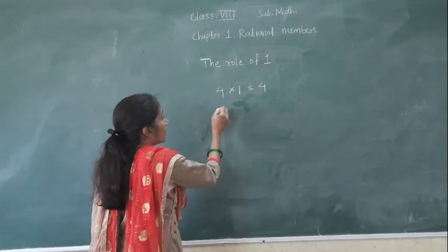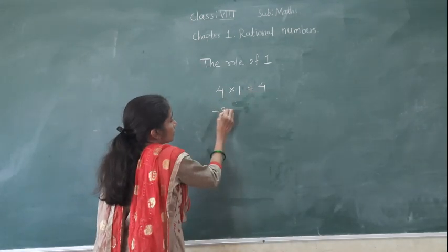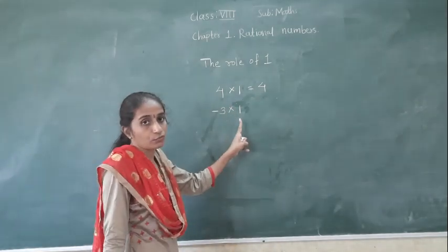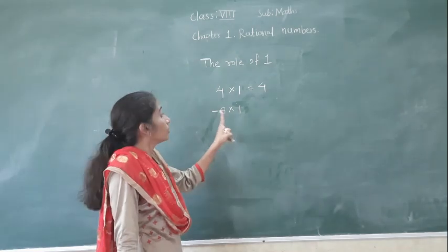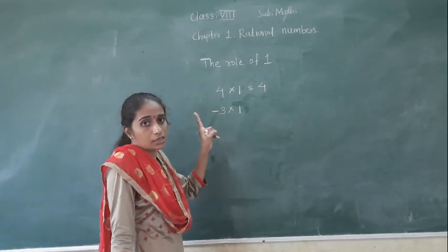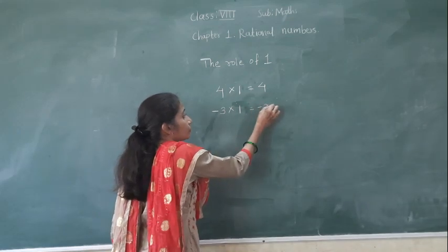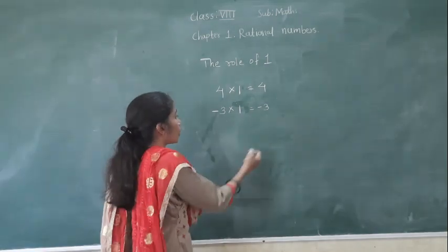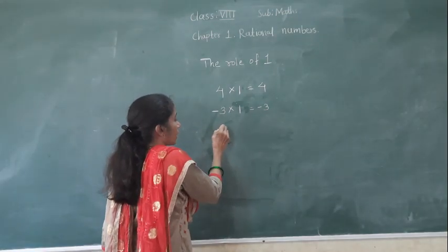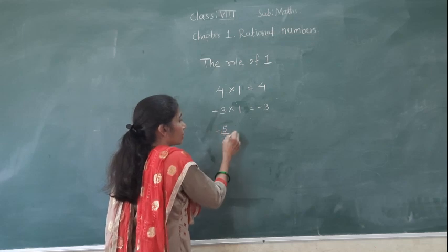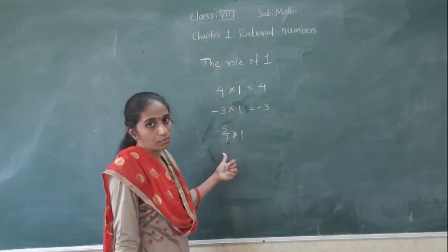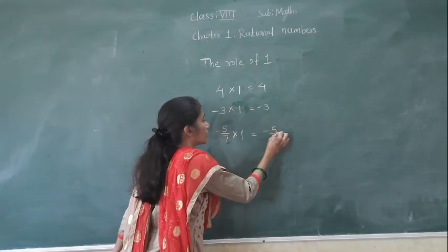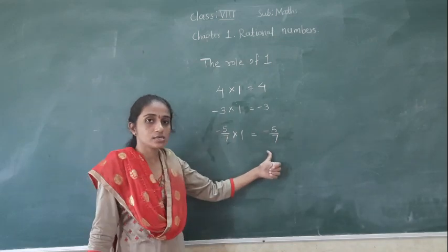Now you will see: we have multiplied. This is for all numbers. Now you will see — suppose I have written minus 3, multiplied by 1. If we multiply any number by 1, the answer is the number itself. You will see for the rational number — suppose if I have taken minus 5 upon 7 into 1. Any number multiplied by 1, the answer is the number itself. So I got the same number, minus 5 upon 7.